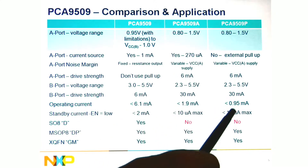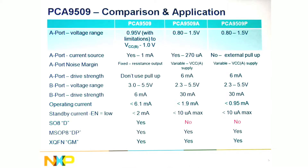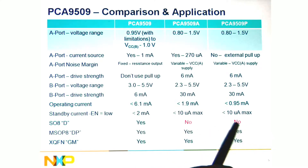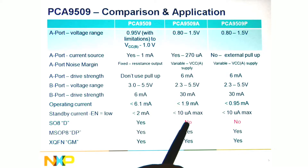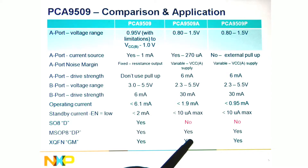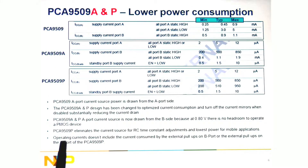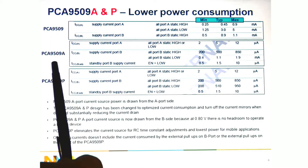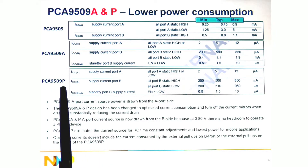You can see that the operating currents are much less on the newer devices. With the 9509A and P, we don't offer the SO8 package. Most customers move to the MSOP8 or the smaller LGA package — a 1.1 or 1.6 by 1.6 leadless package. Now let's talk about the power consumption between the 9509, 9509A, and 9509P.